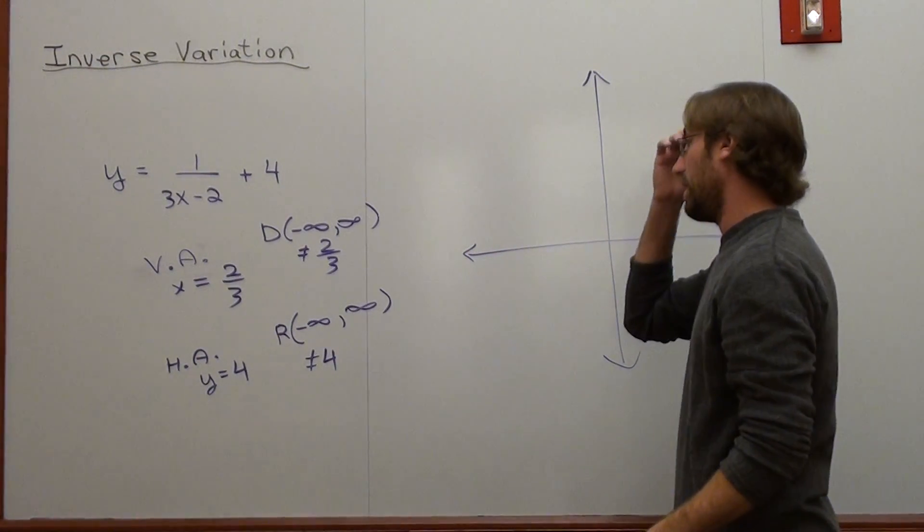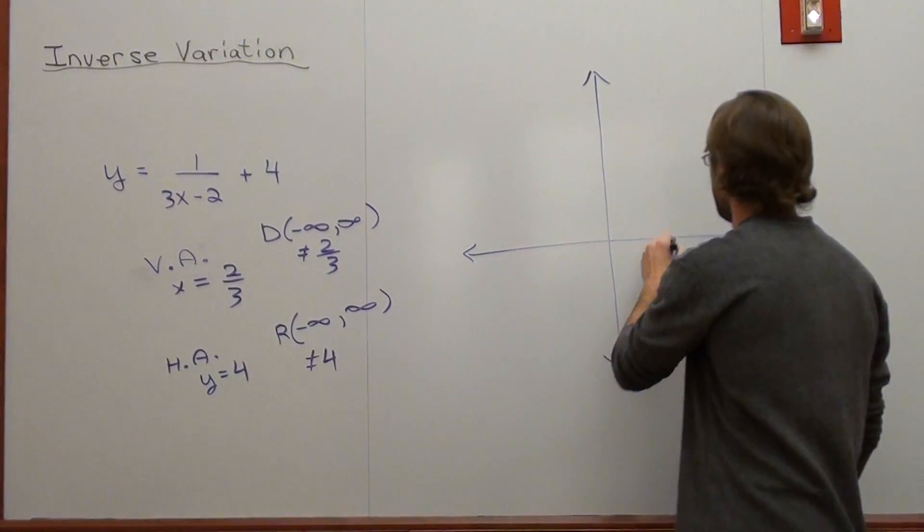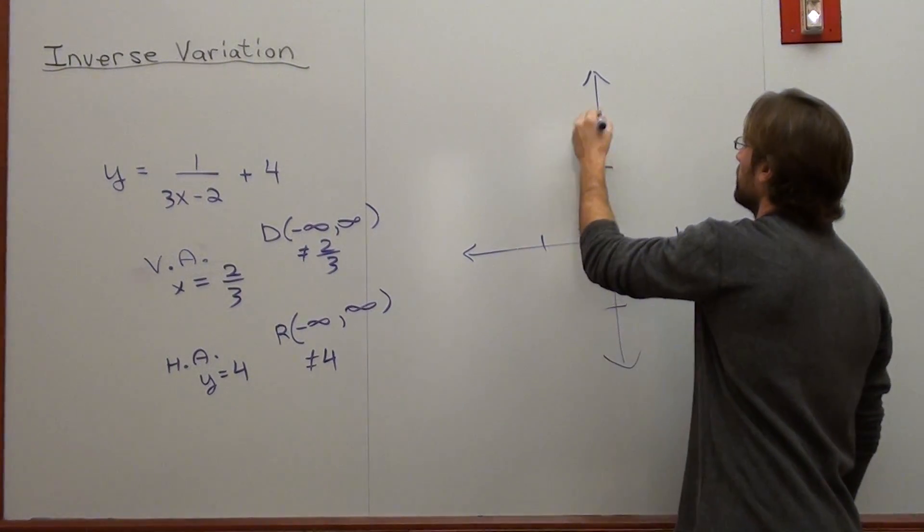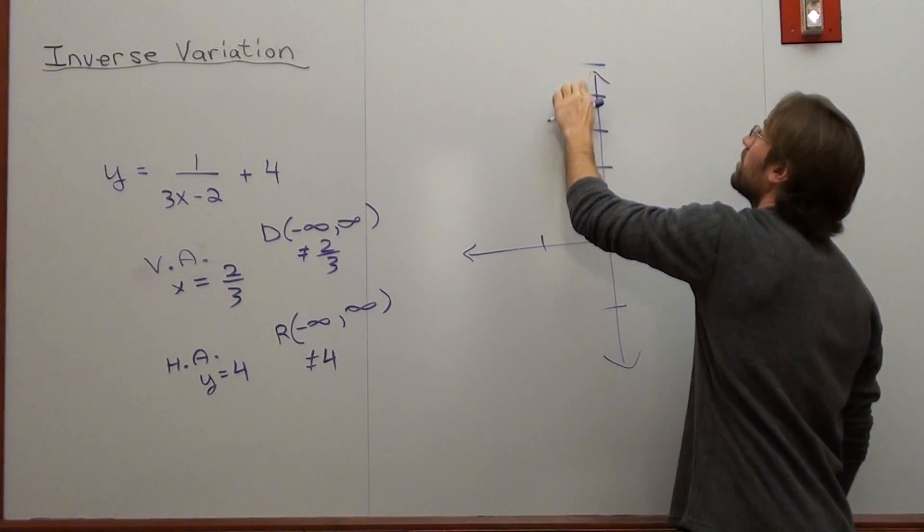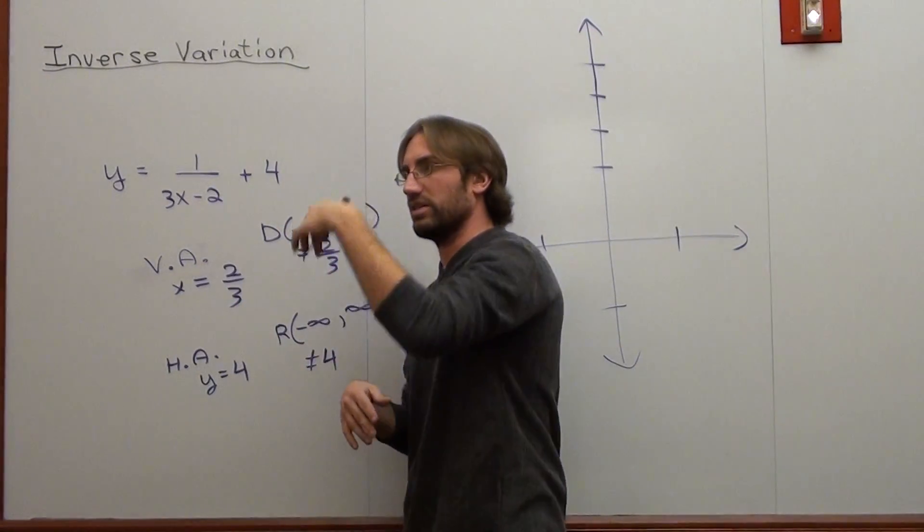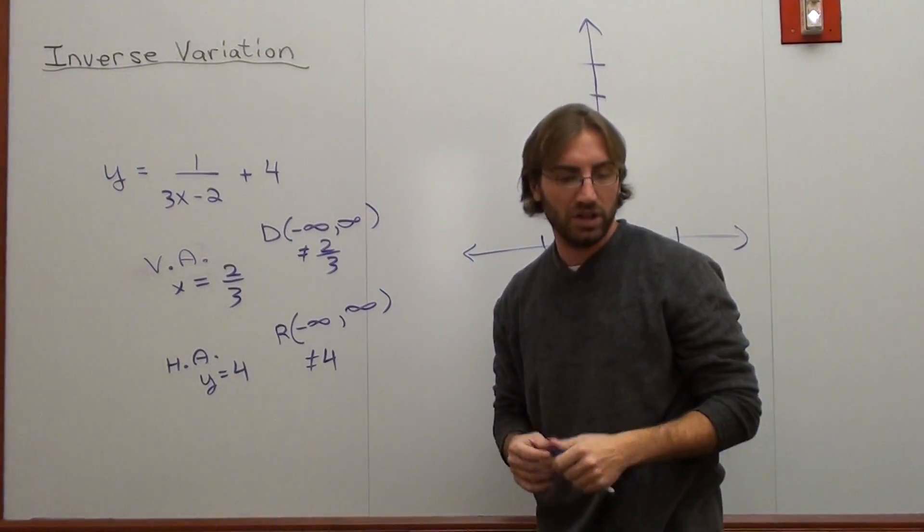So I graphed this bad boy. The vertical asymptote is at 2/3. So I probably should raise that a little bit. And it's a positive function, which means that it's going to flow like this and this. If it were negative, it'd be flipped around, which we already did.